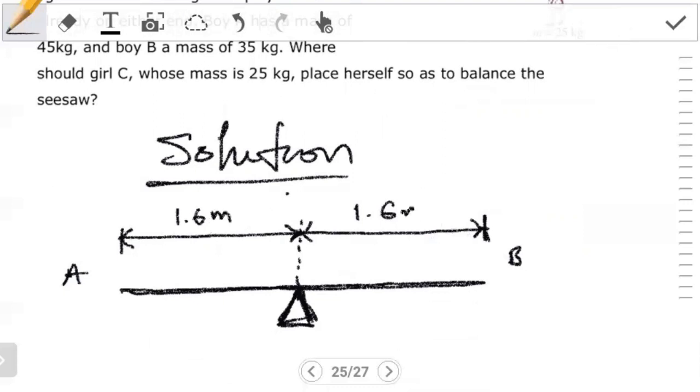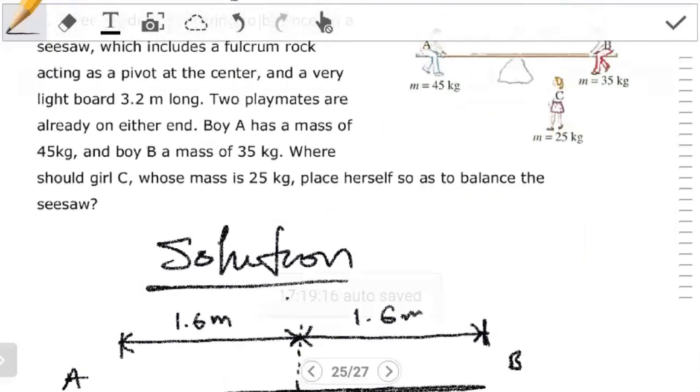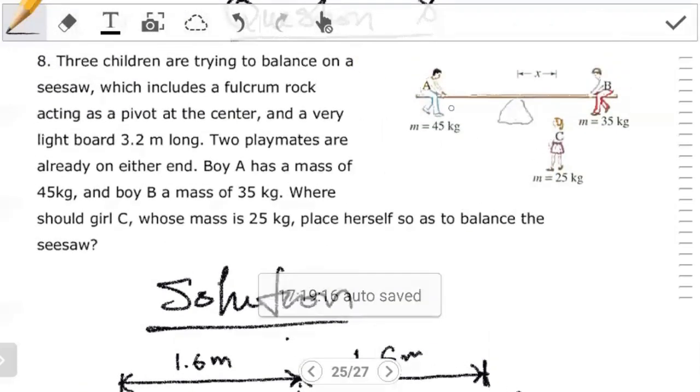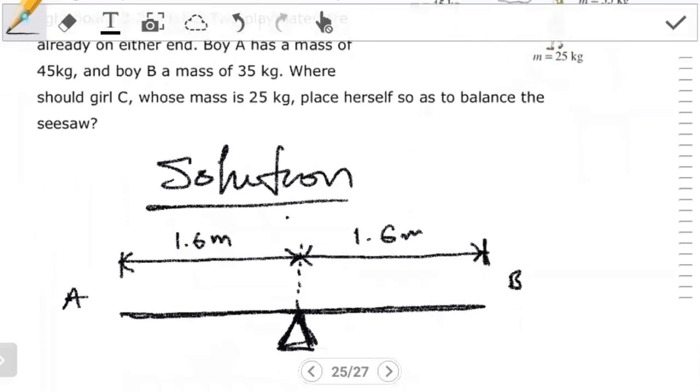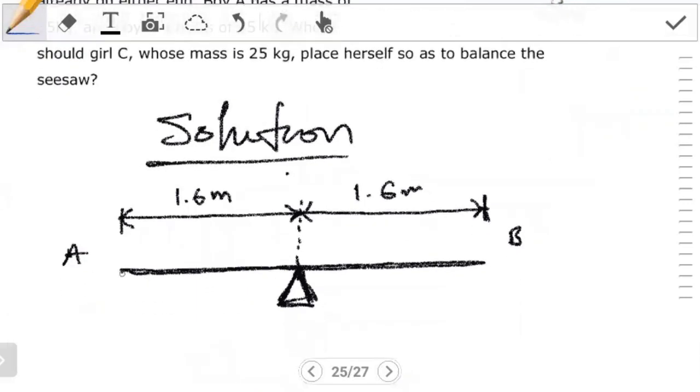On the object, we can actually assign labels. We can say this is person A, and then the other side we have person B. So from the pivot to where A is seated, it's 1.6. And then from the pivot also to where B is seated, we have 1.6 meters there as well. The forces that act on this beam will be due to the weight of these individuals. We have the weight of A pushing downwards, and then we have the weight of B also pushing downwards.